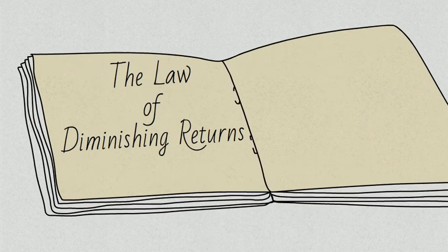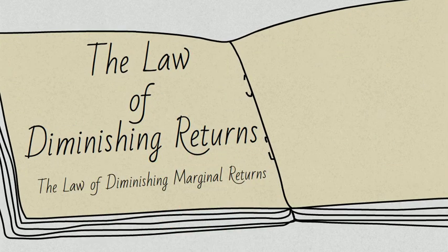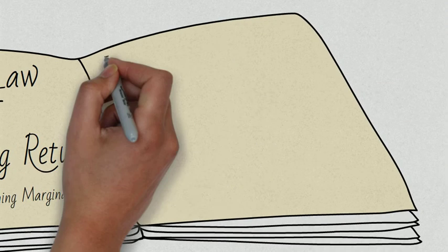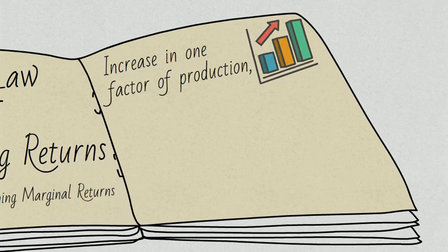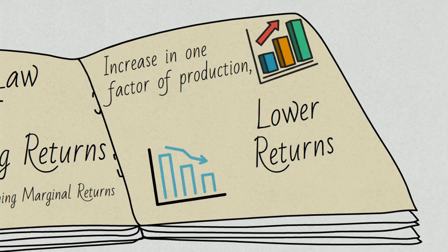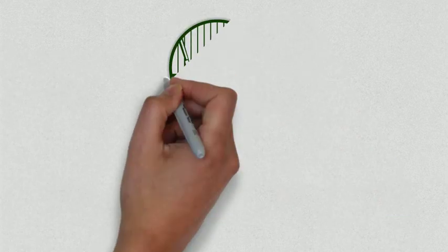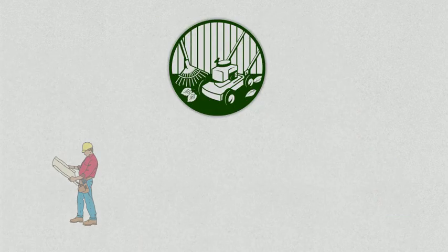The law of diminishing returns, also known as the law of diminishing marginal returns, states that increase in one factor of production generate lower returns. For this example, we use a lawn care company.